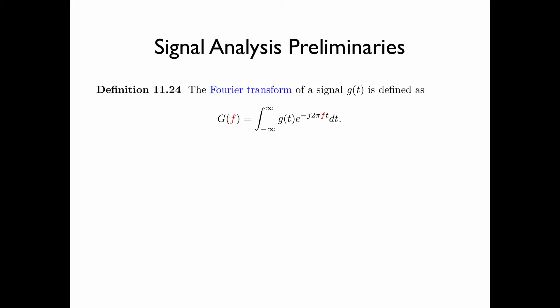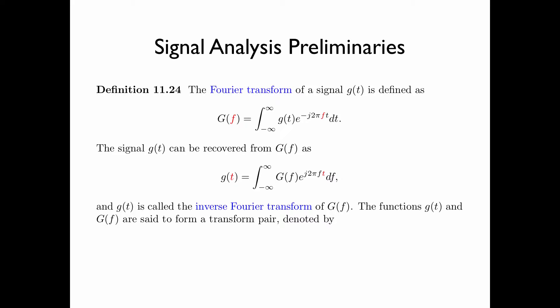In this section, we need some preliminaries from signal analysis. The Fourier transform of a signal g of t is defined as g of f equal to the integral of g of t times e to the power minus j 2 pi f t dt, where t is from minus infinity to infinity. If the Fourier transform exists, the signal can be recovered as g of t equals the integral of g of f times e to the power j times 2 pi f t df. The functions g of t and g of f form a transform pair, and by convention, t and f are referred to as time and frequency respectively.